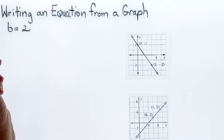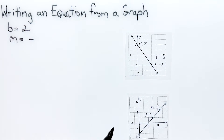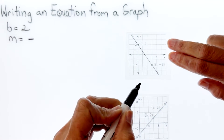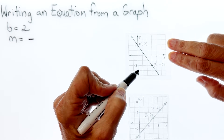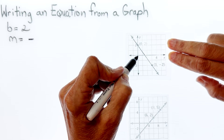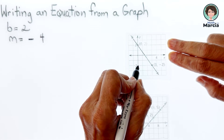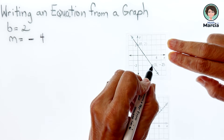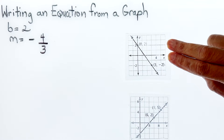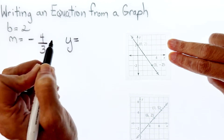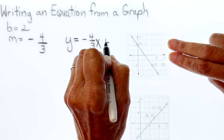My slope is going to be negative because it's going downhill. I'm going to count from one point to the next and write my rise over run: I've gone down 4, and now I'm going over 3. So my slope is negative 4/3. The equation for the graphed line is y equals negative four-thirds x plus 2.